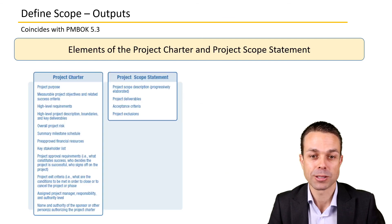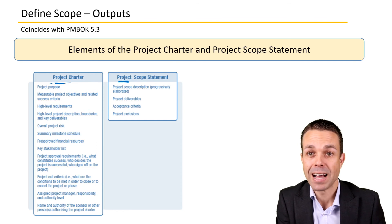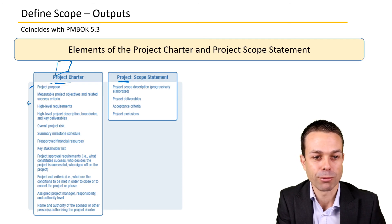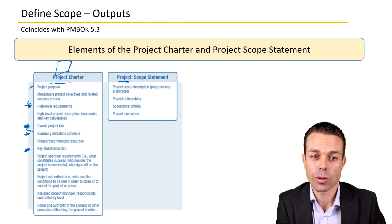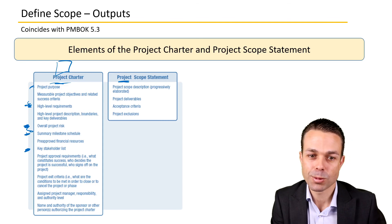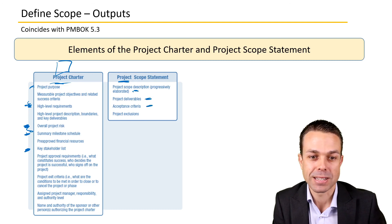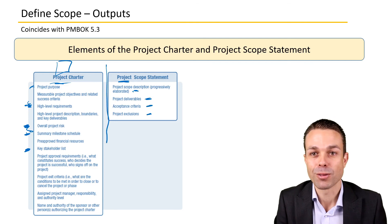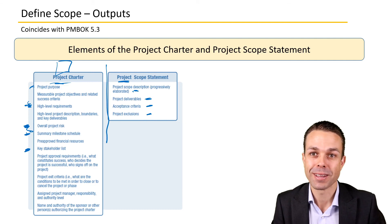Here's a comparison of the project charter versus the project scope statement. The project charter is a high-level document that initiates the project, containing project purpose, high-level requirements, overall project risk, key stakeholders, and summary milestones. The project scope statement, by contrast, contains the detailed project scope description, the deliverables, acceptance criteria, and any exclusions. Both are key documents for your project, and that is the idea behind defining the scope in your project.